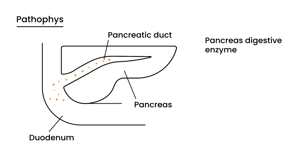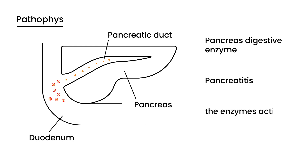While the enzymes are in the duct, they're inactive. Once they're in the duodenum, they become active — illustrated by circling them in red. In pancreatitis, these enzymes are actually activated while still inside the pancreas, which leads to damage of the organ itself.